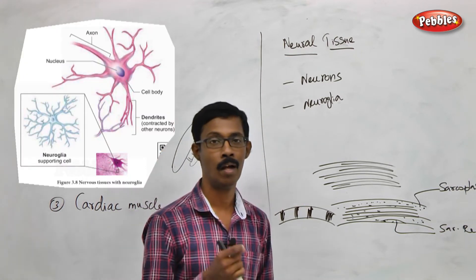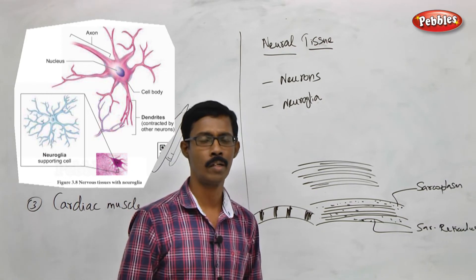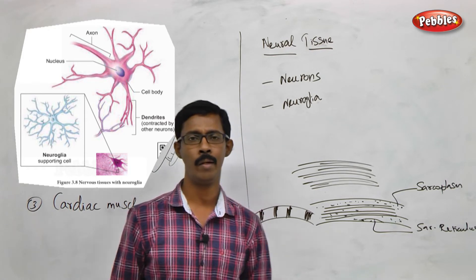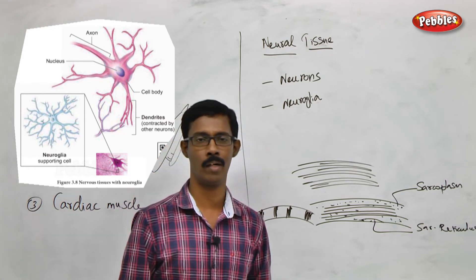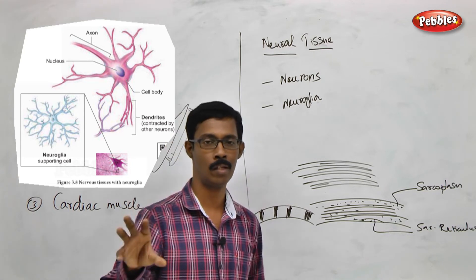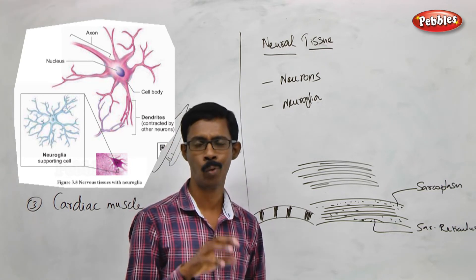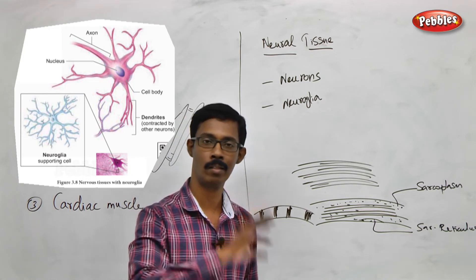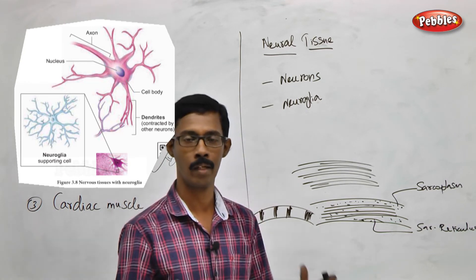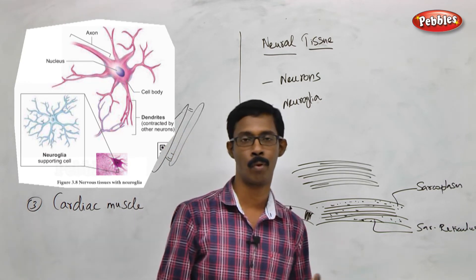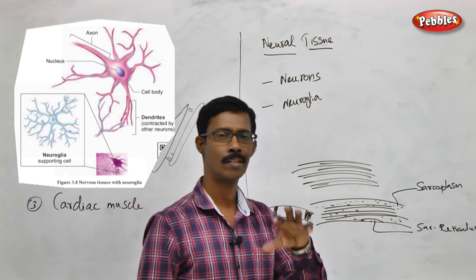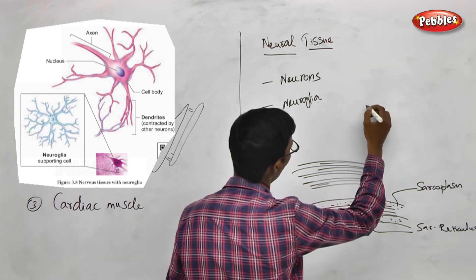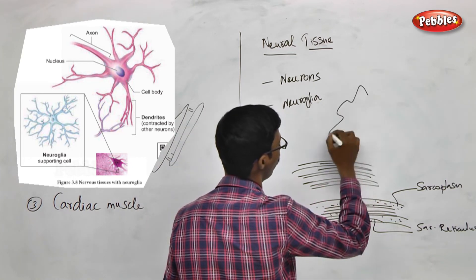Now we discuss the final tissue of the chapter: neural tissue. Neural tissue involves the nervous system. There are two types of cells: neurons and neuroglial cells. Neuroglial cells provide a supportive matrix and play a support role for the entire nervous system.